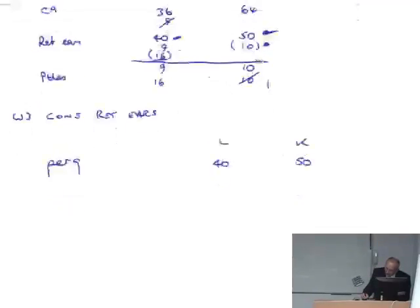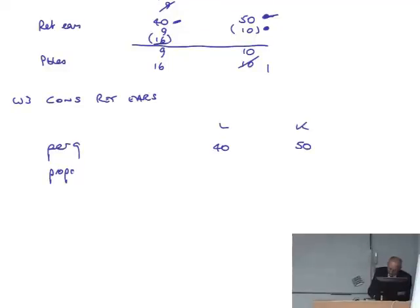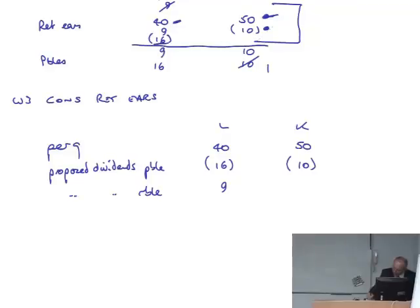So per the question, 40 and 50, but we've got proposed dividends, or dividends payable. 16 dividend is coming out of Limanus and 10 dividend is coming out of Christina. And proposed dividends receivable is 9 coming into Limanus. And that working 3 now reflects these adjustments that we've made at the top of the screen.